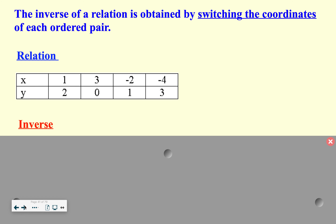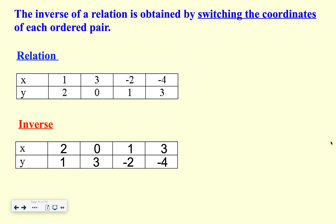All right, on to inverses. Here is your formal definition of an inverse. If you have a relation or function and you're asked to find the inverse, you switch the coordinates of the ordered pair. So if this is my relation — you can see the set of points — if I'm going to find the inverse I literally flip x and y. So my x coordinates become what my y coordinates were, and vice versa. Just a basic example of what an inverse is.